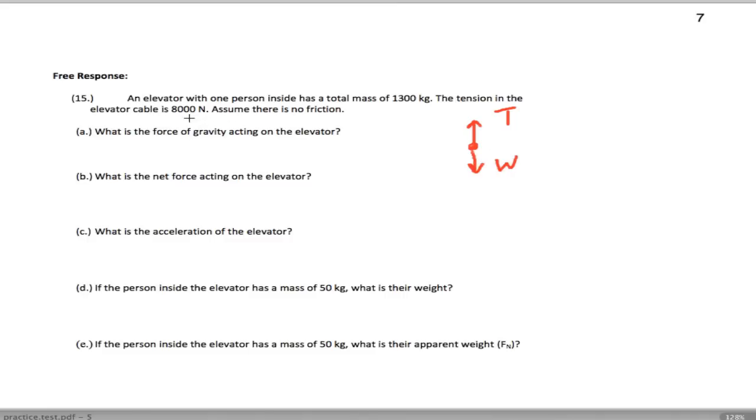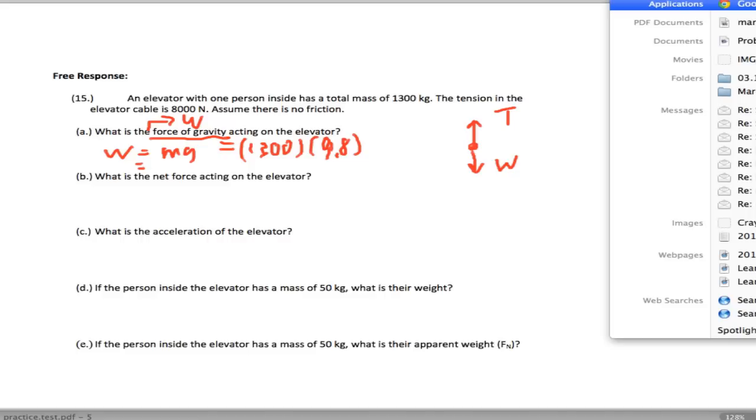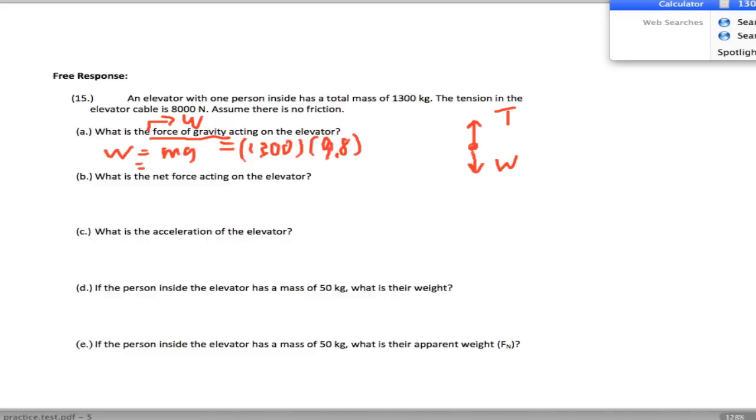We want to know the force of gravity acting on the elevator. Remember, force, gravity, and weight mean the same thing. So W equals mg. That's 1,300 times 9.8, which gives us about 13,000. Let's get an exact number: 12,740 newtons.